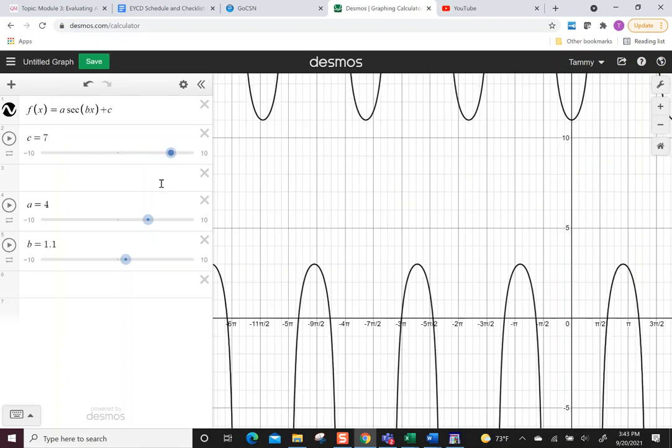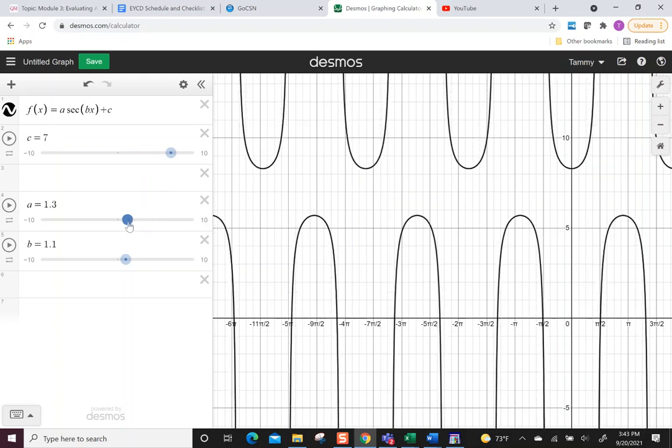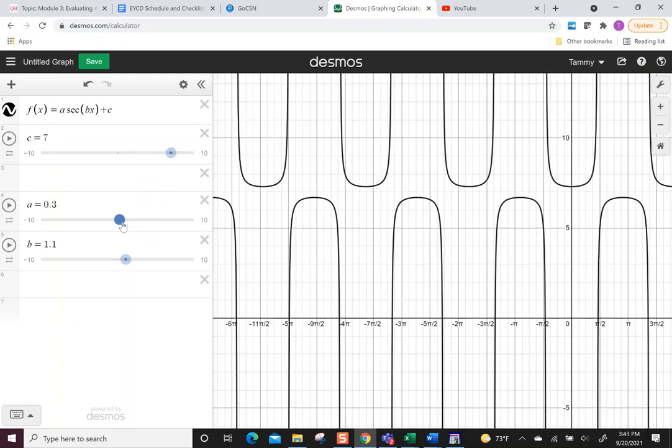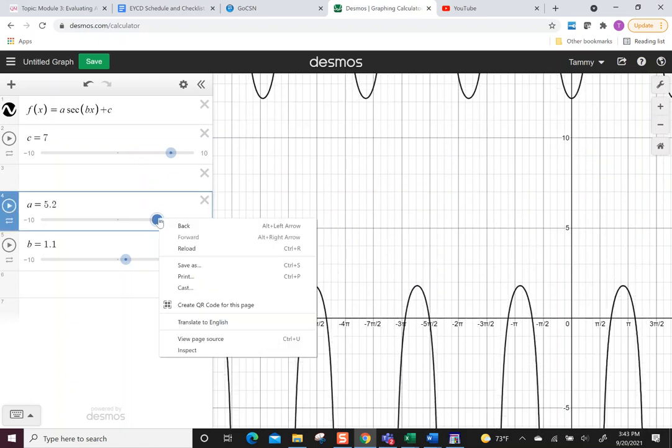But if I want them to get closer, then that's where I have to mess with the amplitude, and I see them really getting close together or really moving far apart.